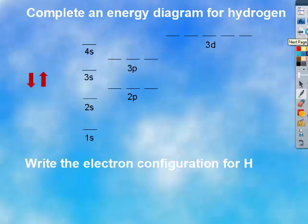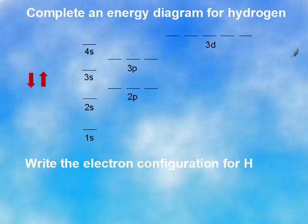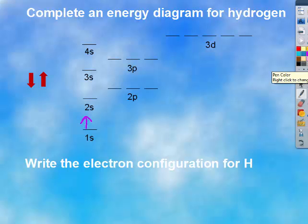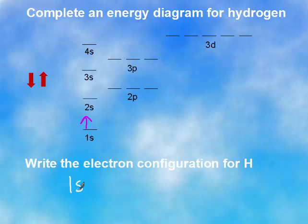If we had to complete an energy diagram for hydrogen, first we have to know how many electrons hydrogen has. Looking on the periodic table, hydrogen has one electron. So that one electron would go to the 1s. To write the electron configuration, all you do is say in the 1s, I have one electron. And that's the electron configuration for hydrogen.